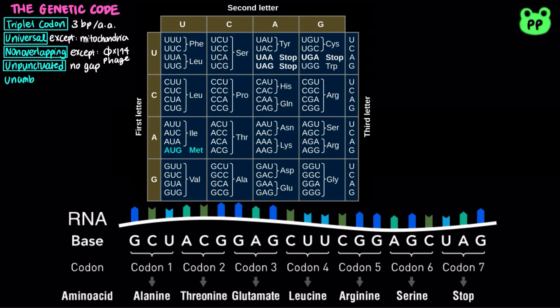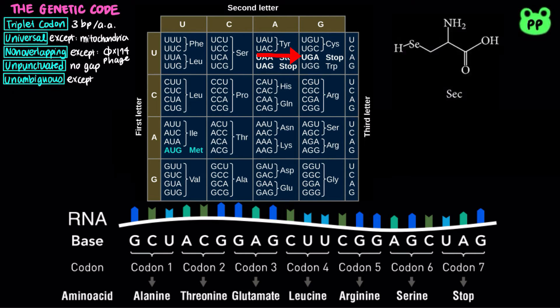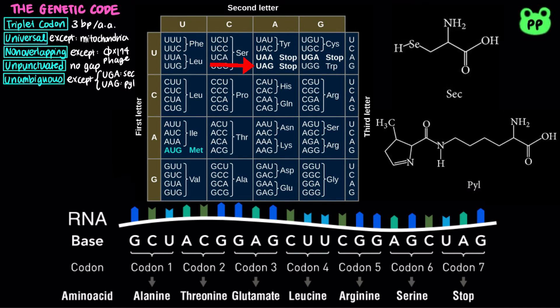There are 64 codons, each coding for either an amino acid or serving as a stop codon, except that the stop codon UGA can also code for selenocysteine, while the stop codon UAG can also code for pyrrolysine.